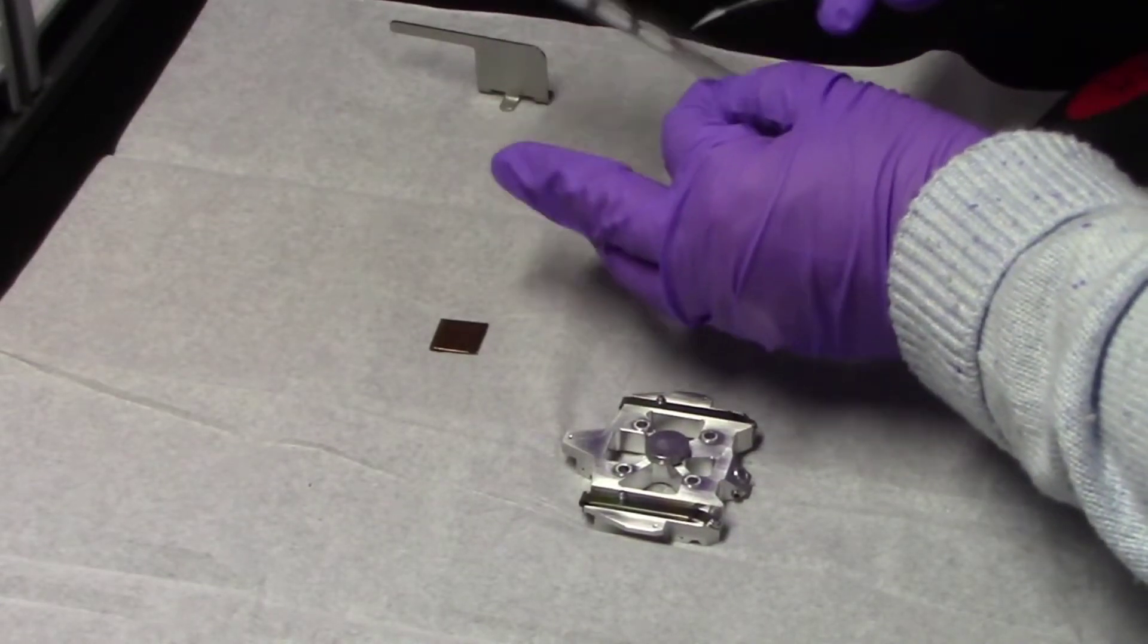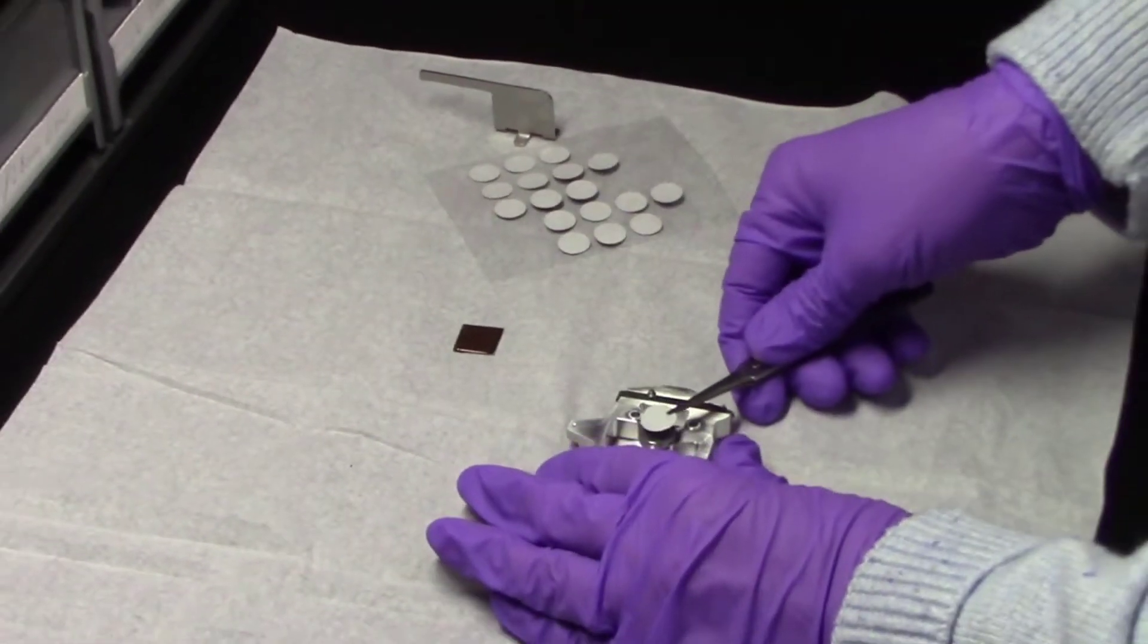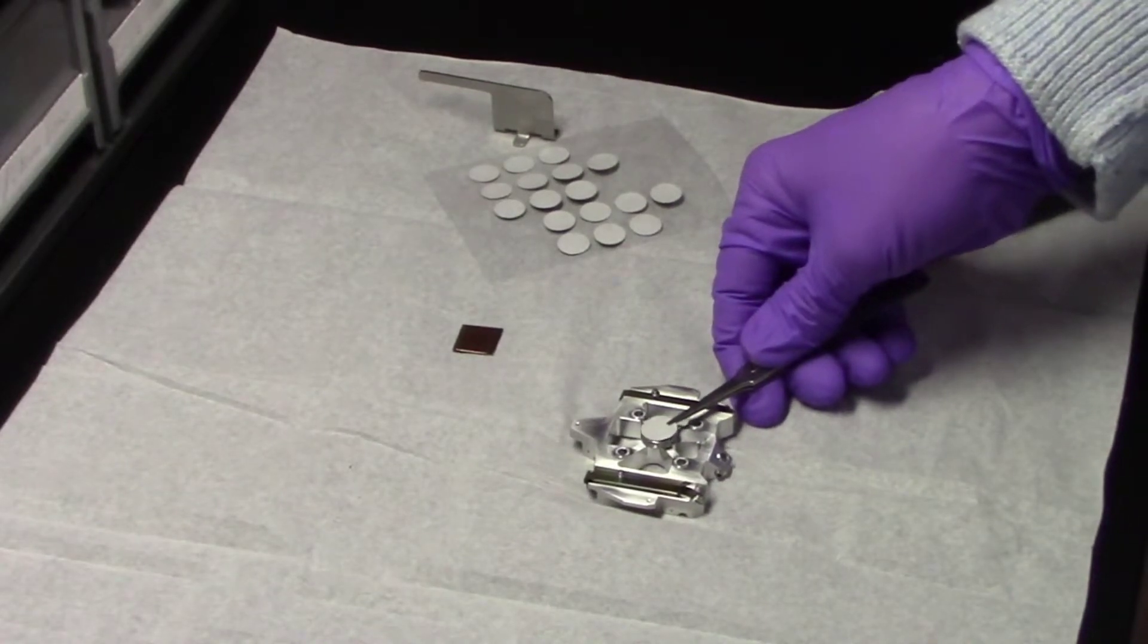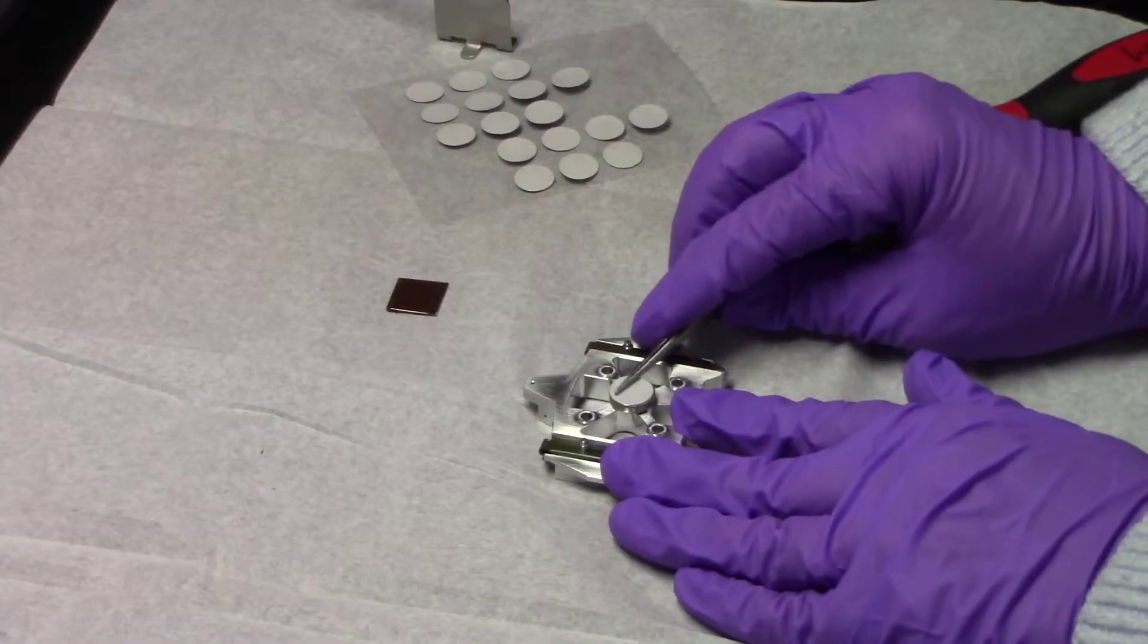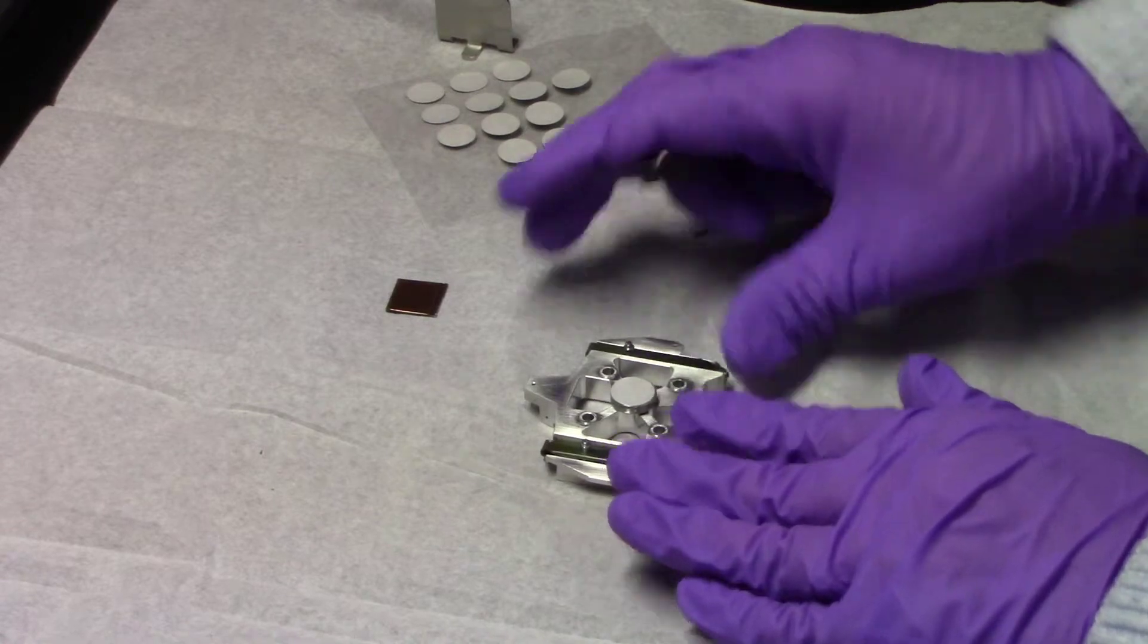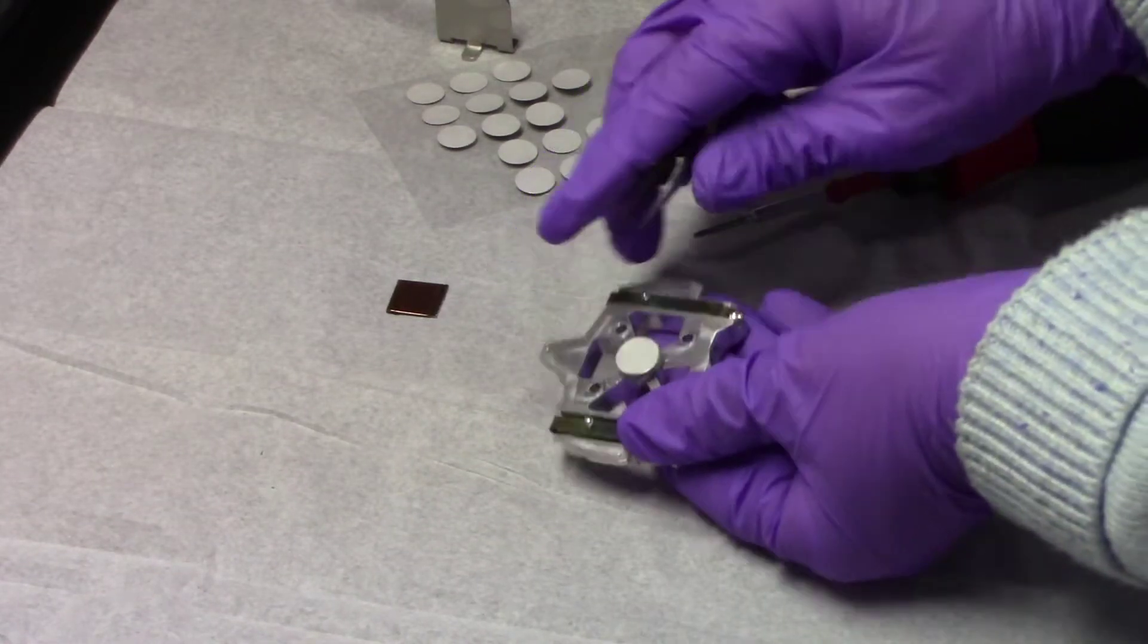Using the tweezers, remove a carbon tab from the backing sheet and place it on the stub. Gently smooth out the tape and then remove the release liner to expose the adhesive.